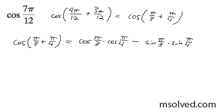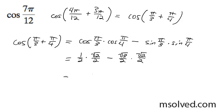The cosine of π over 3 is equal to 1/2, cosine of π over 4 is root 2 over 2, minus the sine of π over 3 which is root 3 over 2, and the sine of π over 4 is root 2 over 2. Multiplying this out we get root 2 over 4 minus root 6 over 4.